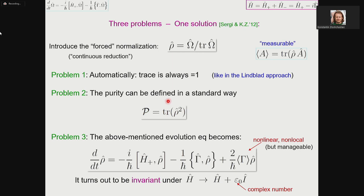All these three problems somehow make you not happy. Maybe for these reasons, non-Hermitian systems did not become popular immediately, although they appeared as early as the 1960s. Apparently there is a solution to these problems. What you have to do is introduce a forced normalization. You have to introduce your operator which is measurable because all the averages are computed as traces with this new operator. This is your omega, old omega, divided by its trace. That way you eliminate problem number one. Problem number two, you can define purity in the standard way.